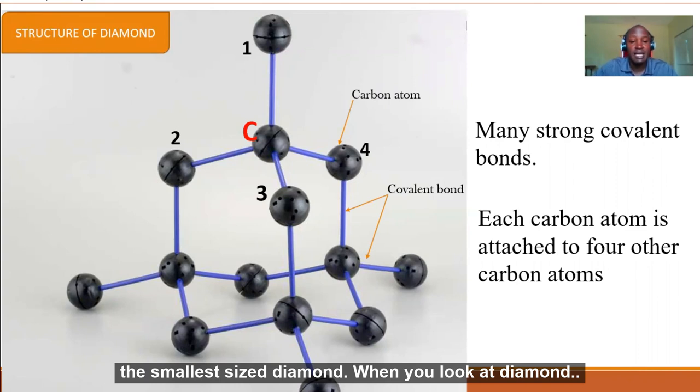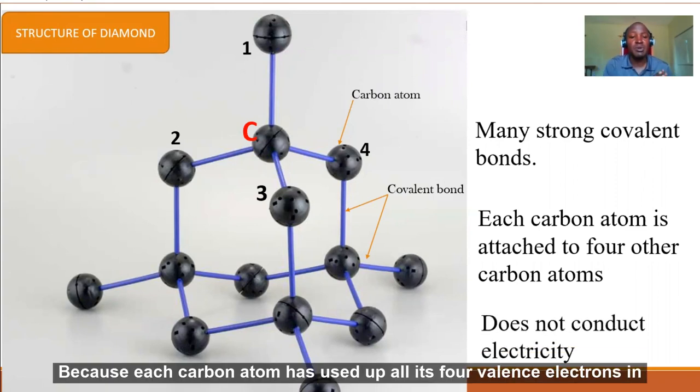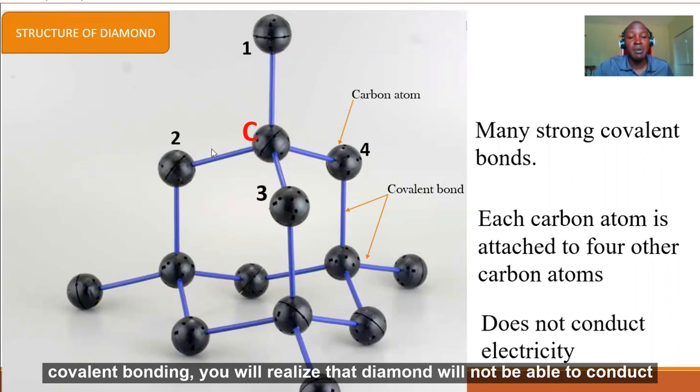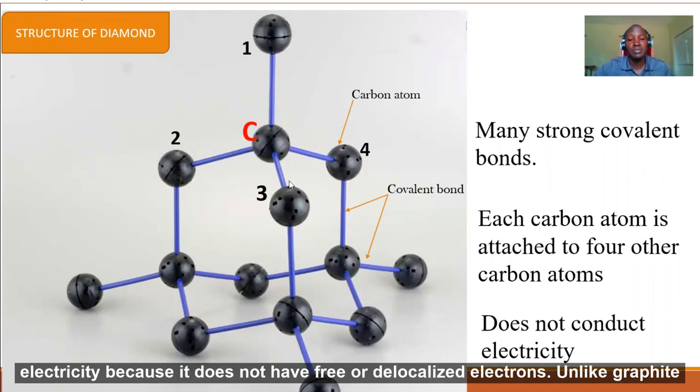When you look at diamond, because each carbon atom has used up all its four valence electrons in covalent bonding, you realize that diamond will not be able to conduct electricity because it does not have free or delocalized electrons.